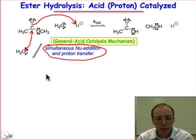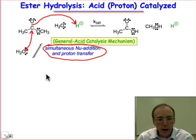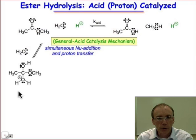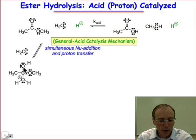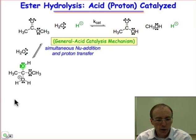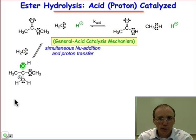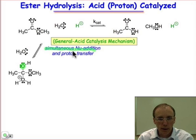Look at that curved arrow carefully. The result is that we'll have a proton added to the oxygen and the nucleophile added in. We require three things to come together: water, carbonyl, and proton. The result is that tetrahedral intermediate with the nucleophile added and the proton added to what was the carbonyl oxygen. So we've accomplished, in one step, proton transfer and nucleophile addition. That's the key point of general acid-catalyzed mechanisms.